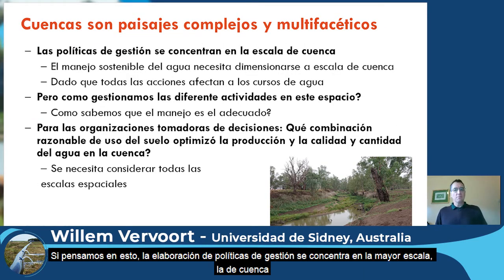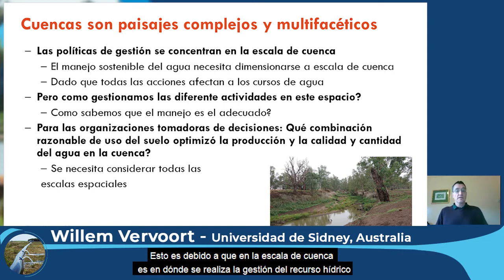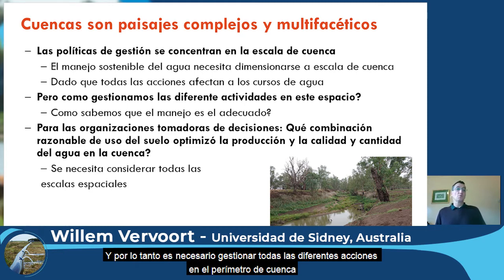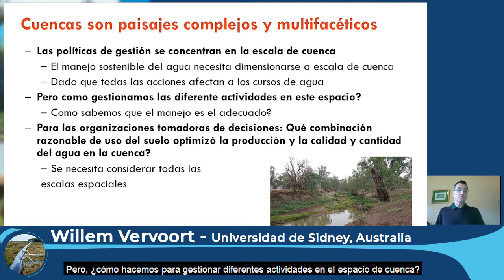However, if you think about policy makers, they concentrate at the larger scale. This is because the catchment scale is where you have to do the water management, since all the different actions within the catchment affect the stream flow. So you have to manage all the different actions within the catchment.